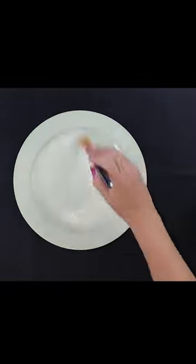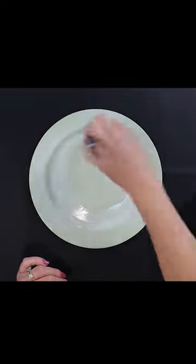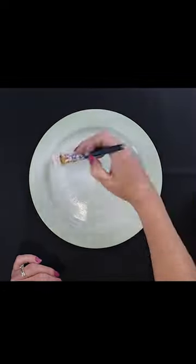Give it two coats of Waverly's chalk paint in the color Celery. Once that dries, give it a layer of Mod Podge to make sure that paint doesn't chip off.